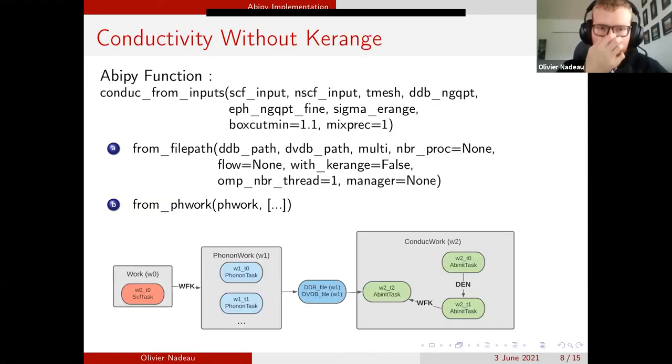Now let's look a bit more about the function that we use in Abipy. The factory function needs first the self-consistent and a non-self-consistent input, which are both dictionaries. It will also need the temperature where we want to calculate the electrical conductivity. It will need the k-point grid of the ddb file. It will need the finer k-point grid that will interpolate during our calculation, and sigma range, which is the interval around the Fermi level where we will calculate the conductivity. From these, we can obtain a workflow.